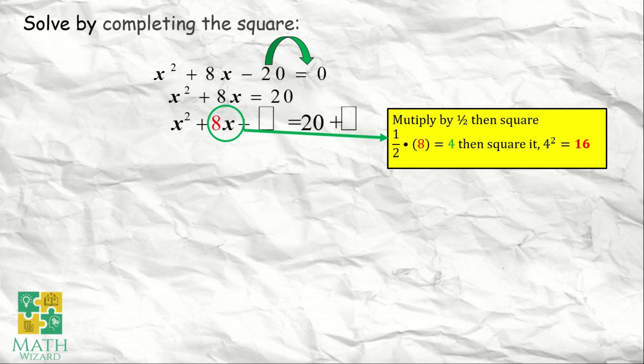Kung ano yung coefficient ng x, imultiply natin sa 1 half, tapos square natin yung sagot. So, 1 half times 8 becomes 4. Square ng 4, or 4 times 4, is equal to 16. Therefore, ang ia-add natin sa both side ng equation ay 16. So, this becomes x squared plus 8x plus 16 is equal to 20 plus 16.